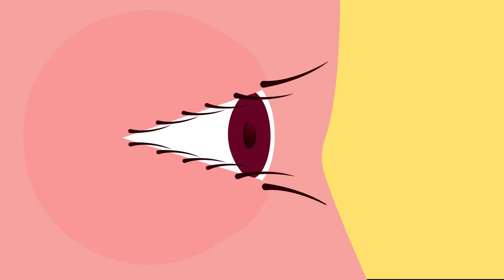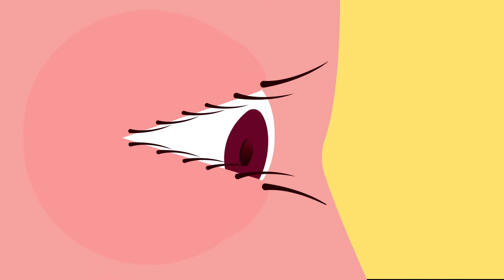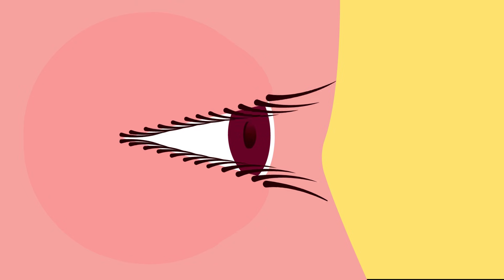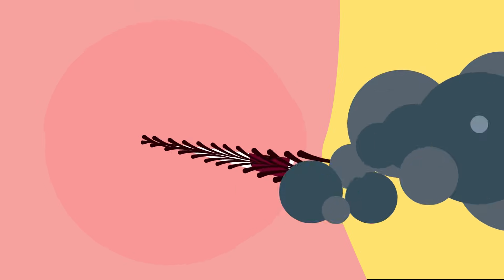The eyelid has three main functions. It protects the eyeball, opens and closes by voluntary or reflex action, and the blinking keeps the surface of the eye and the conjunctiva moist. The eyelashes are the short hairs projecting from the border of the eyelid and trap large airborne particles.